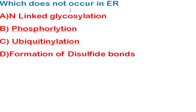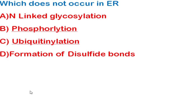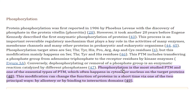The next question: which of the following processes does not occur in the endoplasmic reticulum? N-linked glycosylation occurs in the ER, while O-linked protein glycosylation occurs in the Golgi. Disulfide bond formation also occurs in the ER. Ubiquitination occurs on the cytosolic side of the ER. The correct answer is phosphorylation, which does not occur in the ER — it occurs in the cytosol or nucleus on target proteins as a post-translational modification.